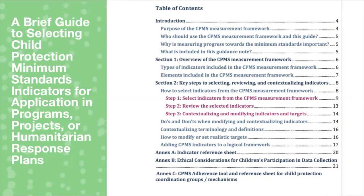This presentation speaks to the wider guidance document, and I encourage you to go through it for further details. It has additional guidance on do's and don'ts, includes an indicator reference sheet, and covers ethical considerations we need to account for regarding children's participation and data collection. For child protection coordination groups, there is also a CPMS adherence tool and reference sheet to support monitoring of selected indicators.